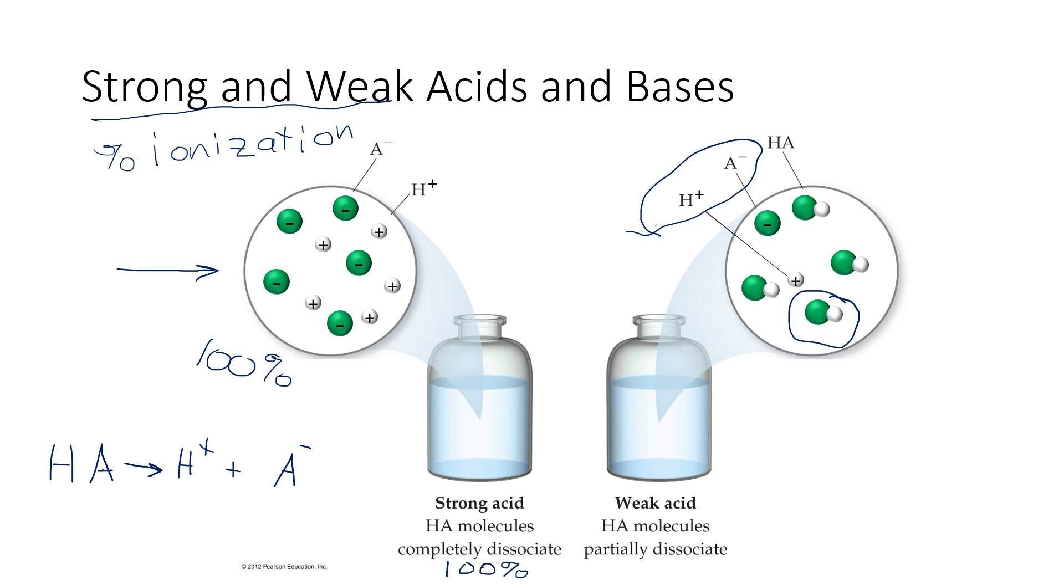Those are the little teeny fraction that actually dissociated. If we're going to put numbers to this, the percent dissociation of a weak acid is typically around 1 to 3%. So that would mean if we had 100 HA molecules dissolved in water for a weak acid, somewhere between 1 and 3 of those 100 molecules would break apart to ions. The other 97 to 99% would stay stuck together as HA molecules.